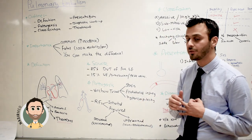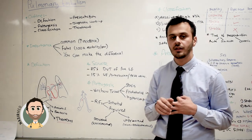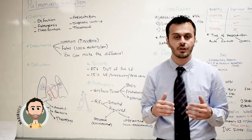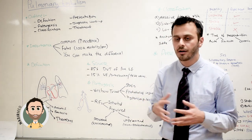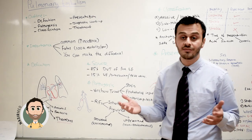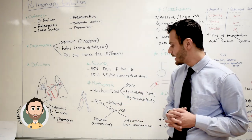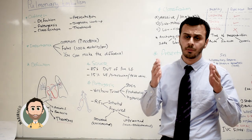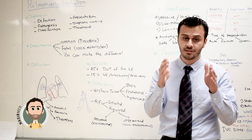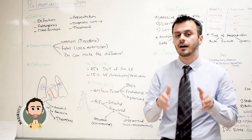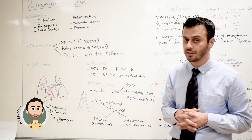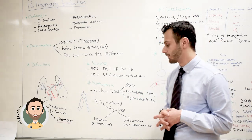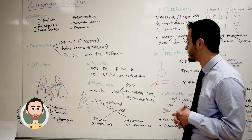The second factor is endothelial injury. Patients with recent surgery, trauma, or previous DVT can disrupt the inner layer of the blood vessel — the endothelial layer — and that can precipitate blood clot formation as well.